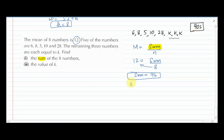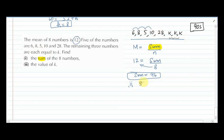We know that mean = sum/n, so sum = mean × n = 12 × 8 = 96. That is the sum of the eight numbers. For k: 6+8+5+10+28 = 57. So 57+3k = 96, therefore 3k = 39, giving k = 13. That is the final answer.